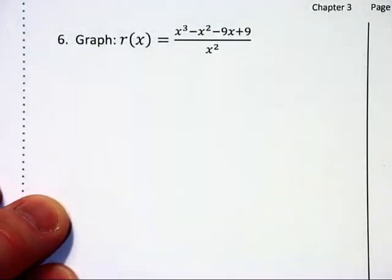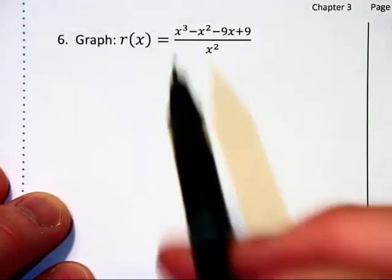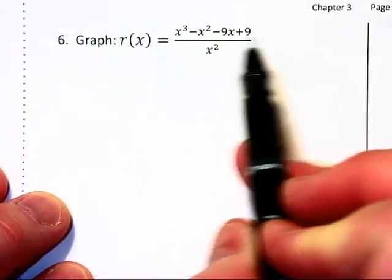Now we're being asked to graph this rational function, and notice how there are four terms up in the numerator.